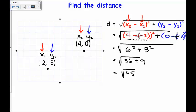Now, using my calculator, the square root of 45 as a decimal is about 6.71. And that is the distance between these two points.